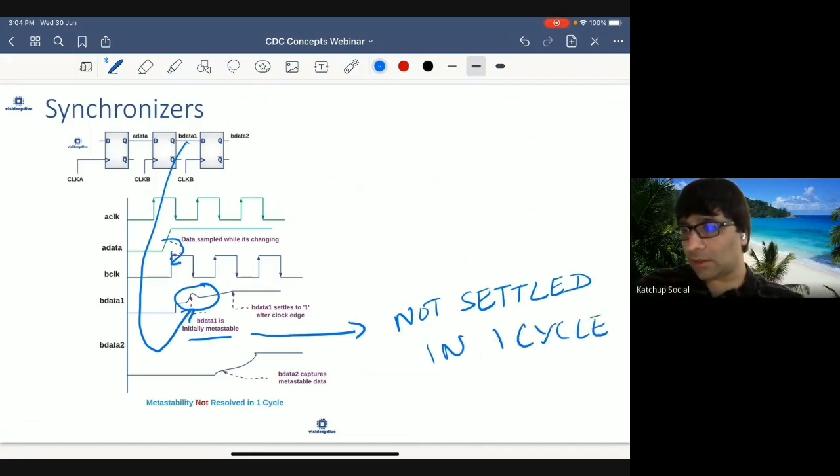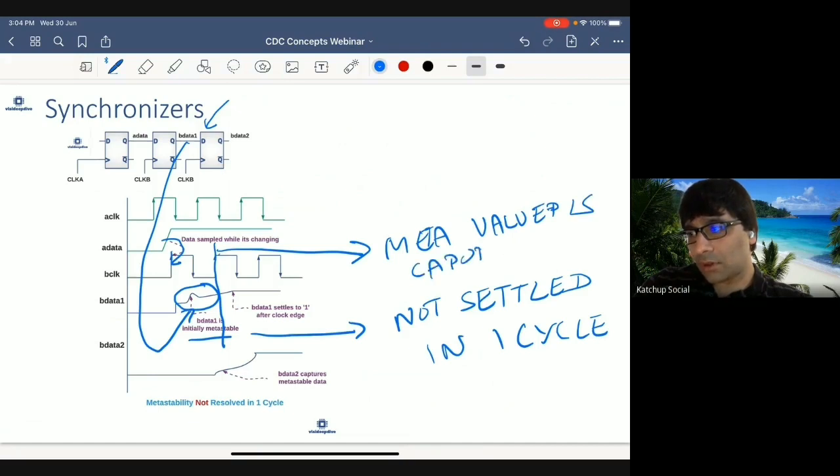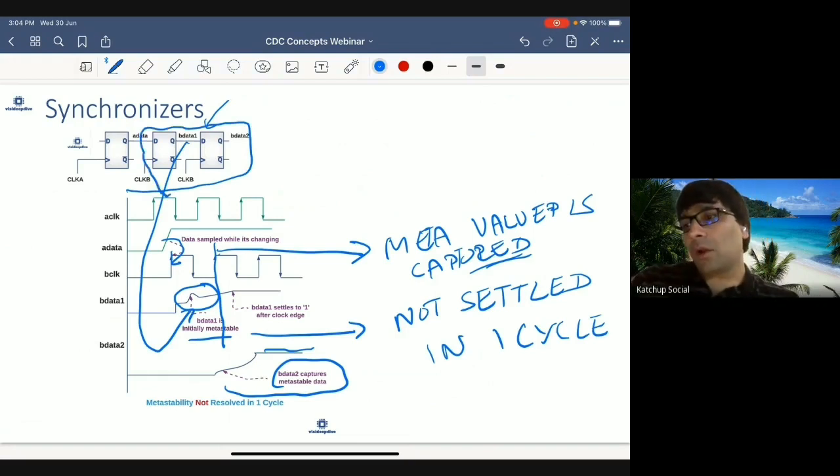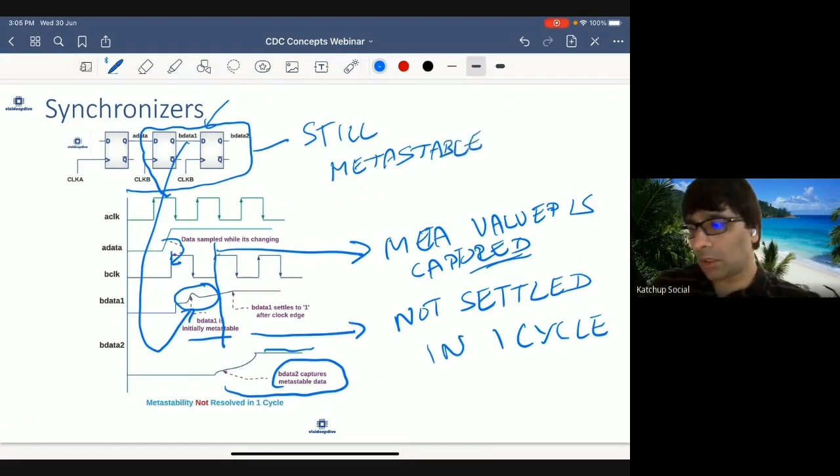And because it did not settle in one cycle, when on the d pin of it, when the clock edge comes, a metastable value is captured. So B data 2 captures a metastable value and B data 2 is still metastable. So you have two back-to-back flops. You created a synchronizer. Your output is still metastable. So if metastability is not resolved in one cycle, two back-to-back flops synchronizers cannot totally remove metastability.